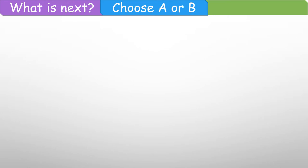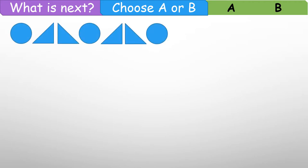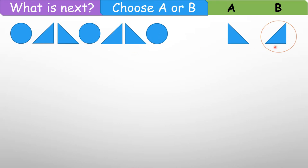So let's have this review first. What is next? Choose A or B. So with these patterns, what do you think is the next? That would be letter B. Kasi circle na ito, diba? Circle and then sunod ito. Diba? So, dapat after nito, edi ito yung kasunod.